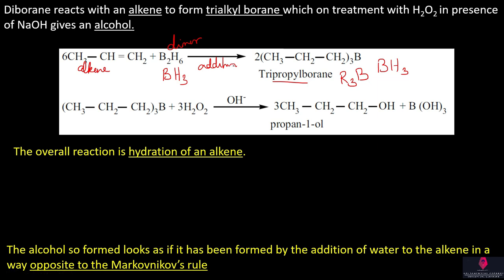First step is the addition reaction, and we get the product. The second step is the reaction with alkaline hydrogen peroxide — H2O2 in the presence of NaOH. This condition is alkaline hydrogen peroxide. This reaction is oxidation. So trialkyl borane is oxidized, and the product is propanol.